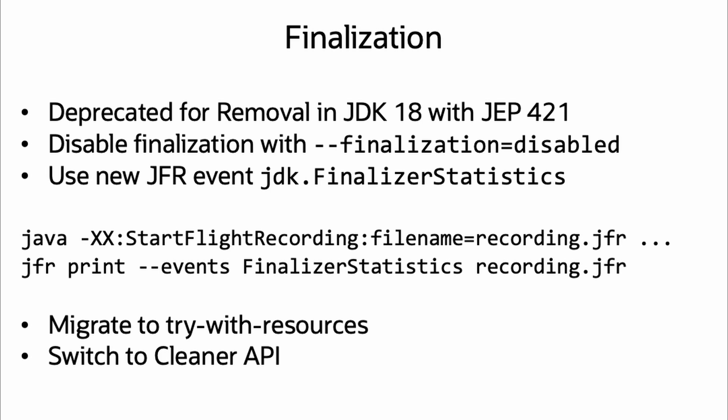The on-screen commands provide examples of enabling JFR and filtering to instances of JDK.FinalizerStatistics. If the references to finalize are in your code, there are two primary options: either migrating the code to use TryWithResources or switching to the Cleaner API. Detailed explanations of both are in the article and the description.